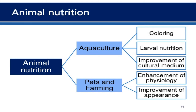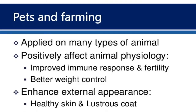In aquaculture, three parameters are considered: whether algae is used for coloring or improvement of coloring, for larval nutrition, or for improvement of the culture medium. In the case of pets and farming, algal culture or algal biomass is used for the enhancement of animal physiology and improvement of appearance.